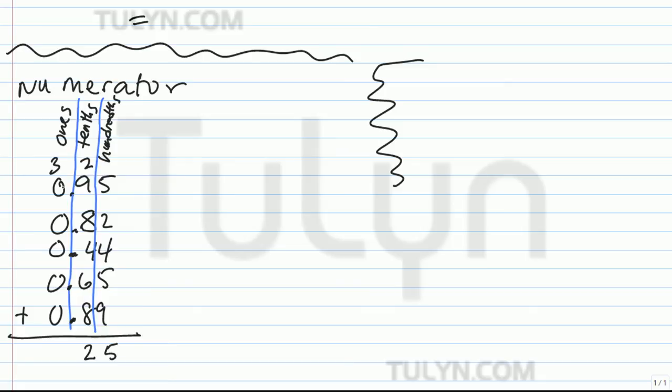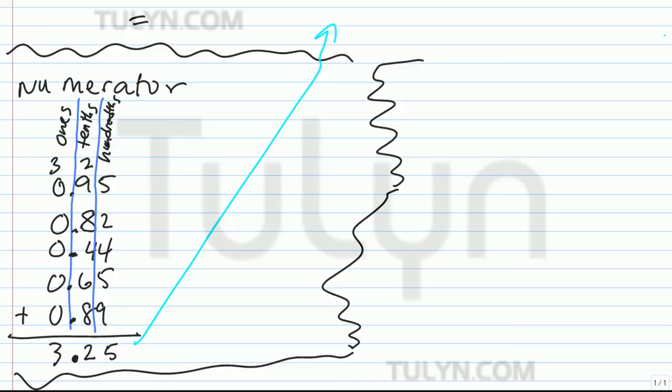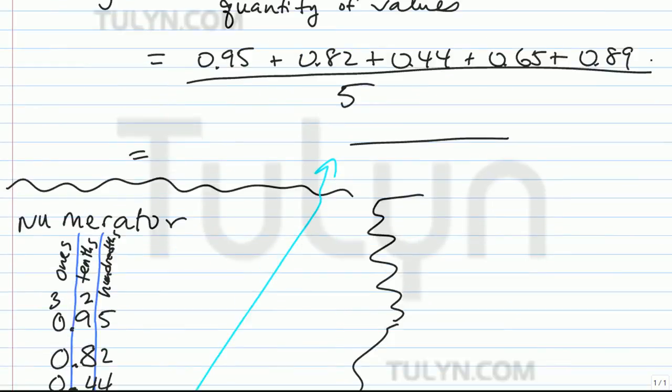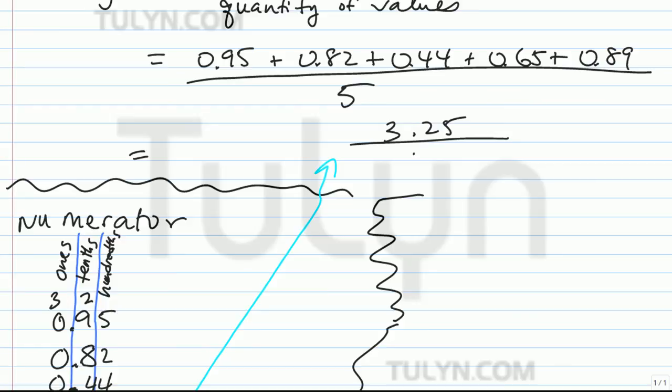So 3 plus 0 is 3. 0 plus 3 will just give you 3. Replace back the decimal. So that's your numerator right here. I'm just going to go ahead and loop it back to the top. So your numerator is 3.25 divided by 5.